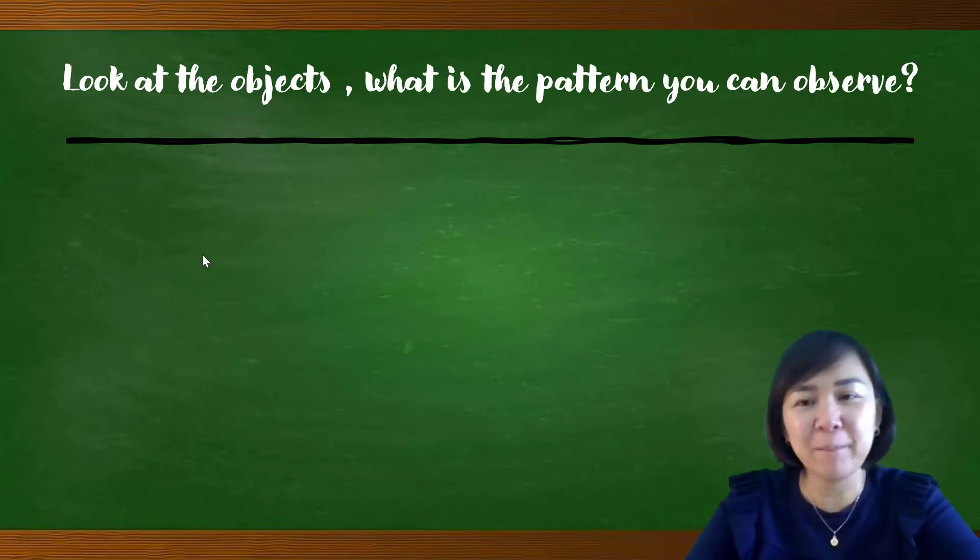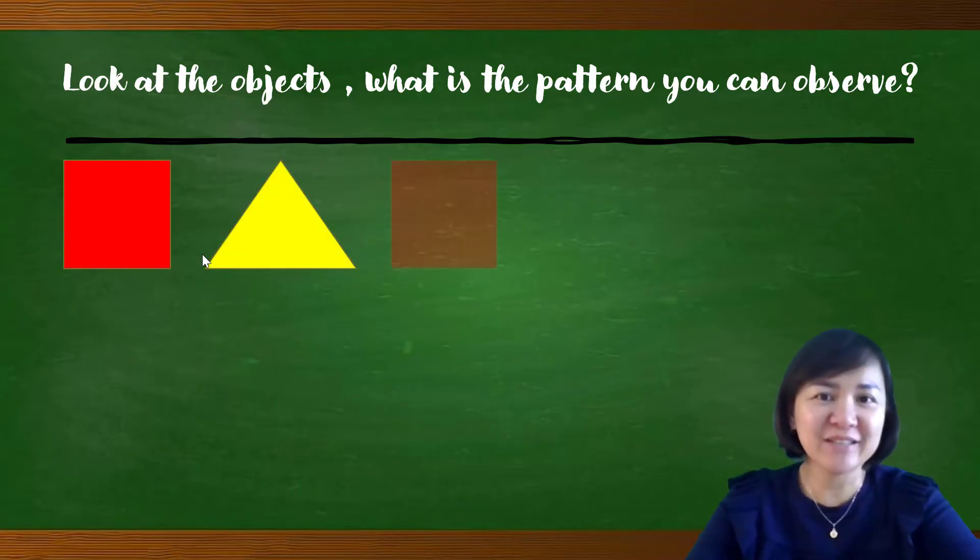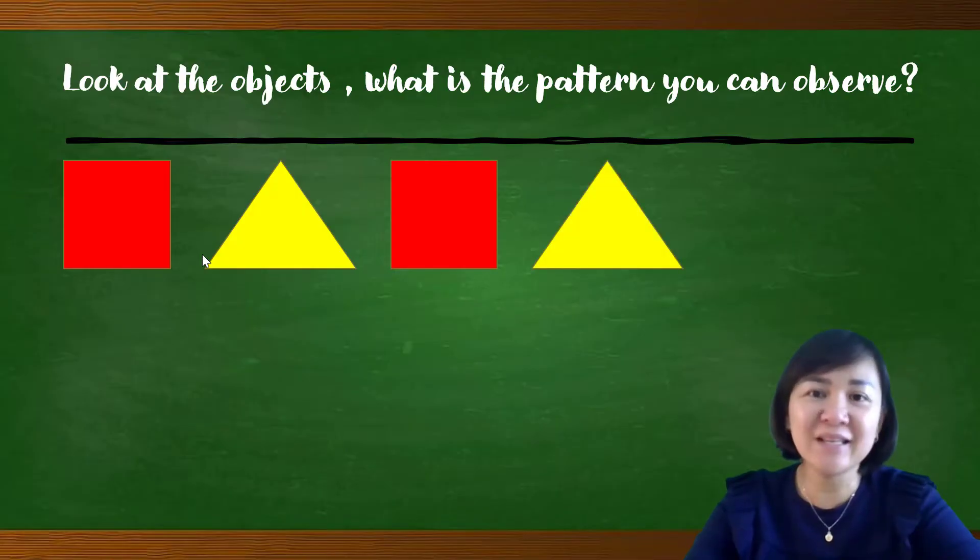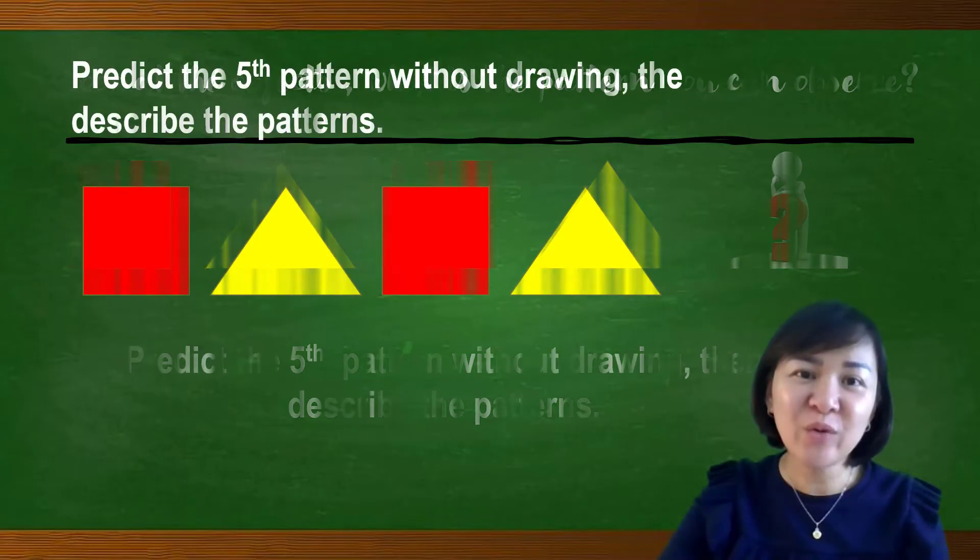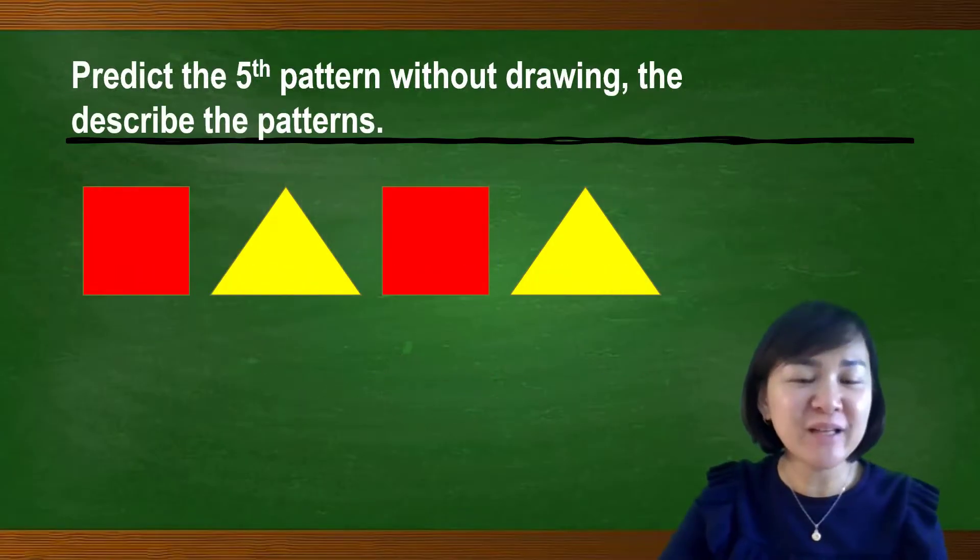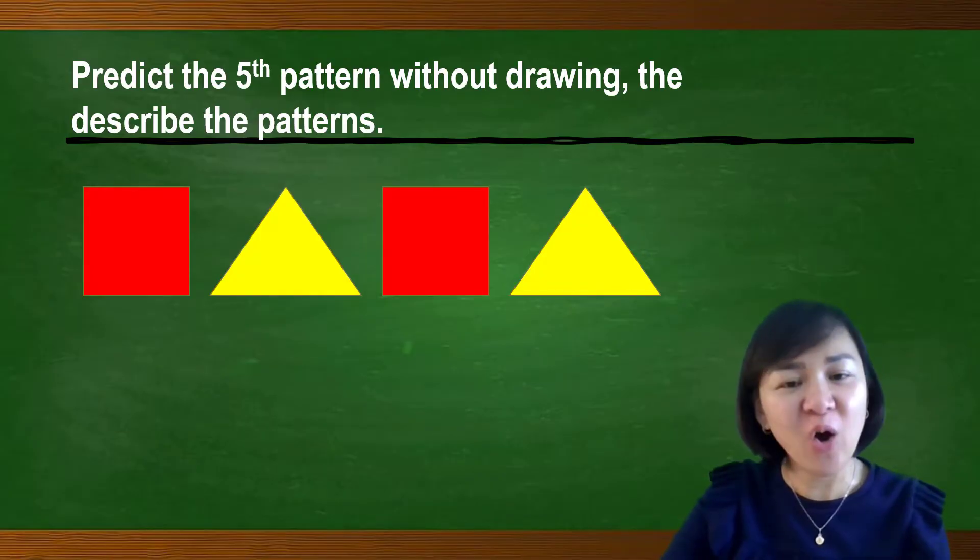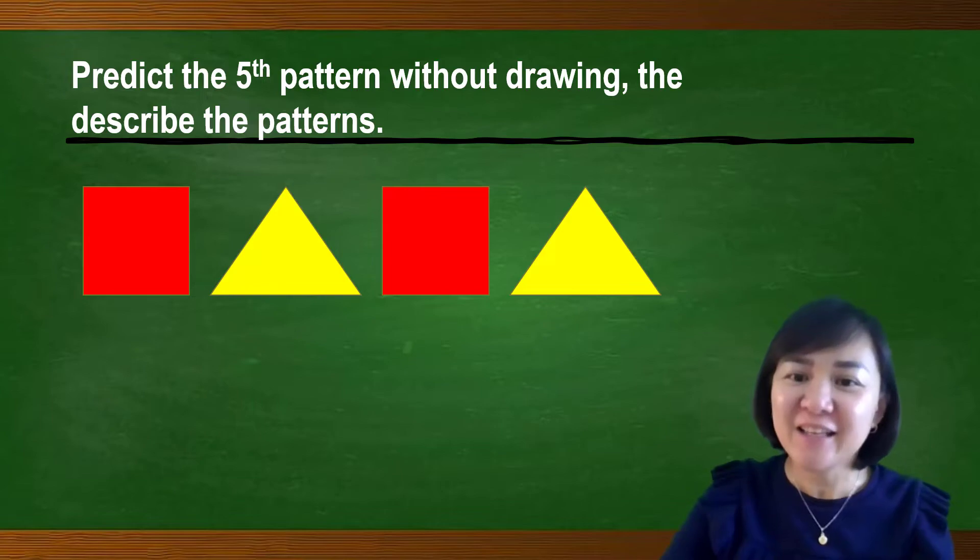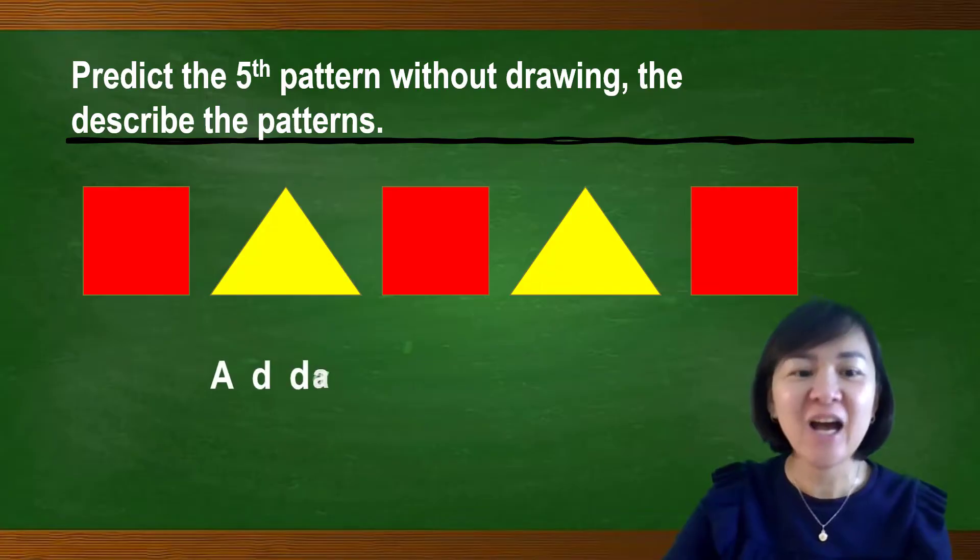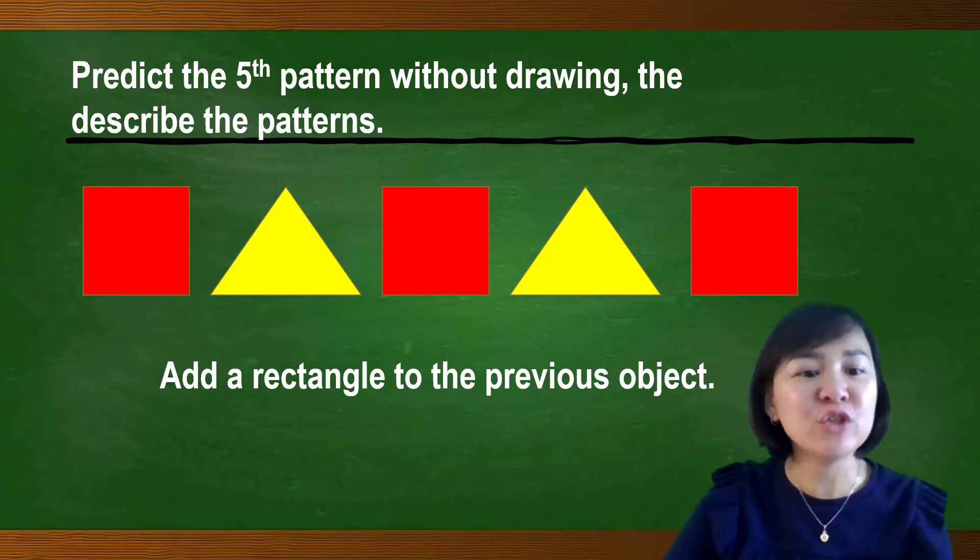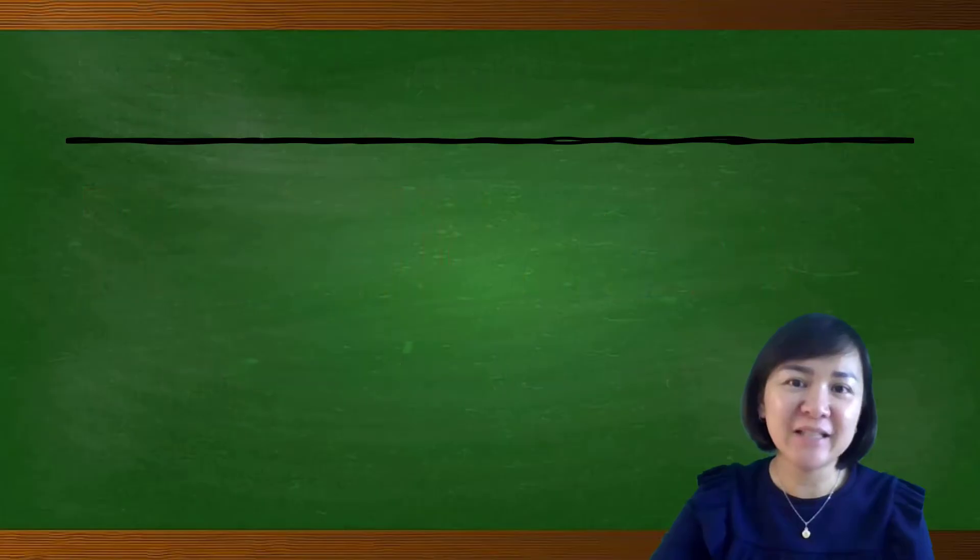Look at the object. What is the pattern you can observe? A rectangle, a rectangle, a rectangle, a triangle. What is the object come next? Predict the fifth pattern without drawing, then describe the patterns. Let's look at the answer. What do you think for the fifth patterns? Rectangle or a triangle? Yes, that is a rectangle come next. Therefore, we can write out the patterns by add a rectangle to the previous object.